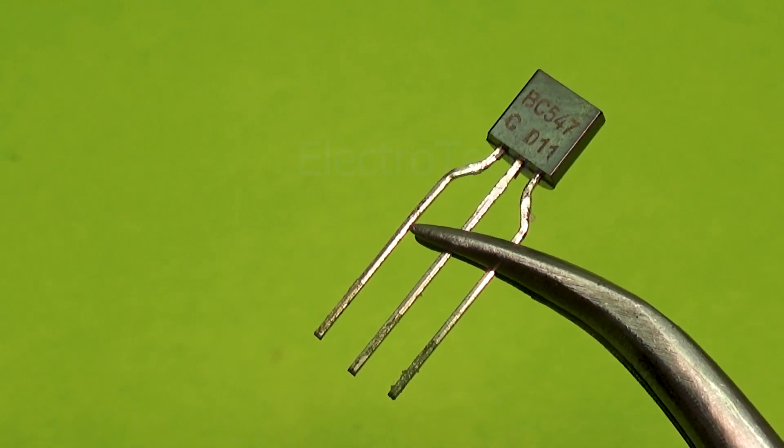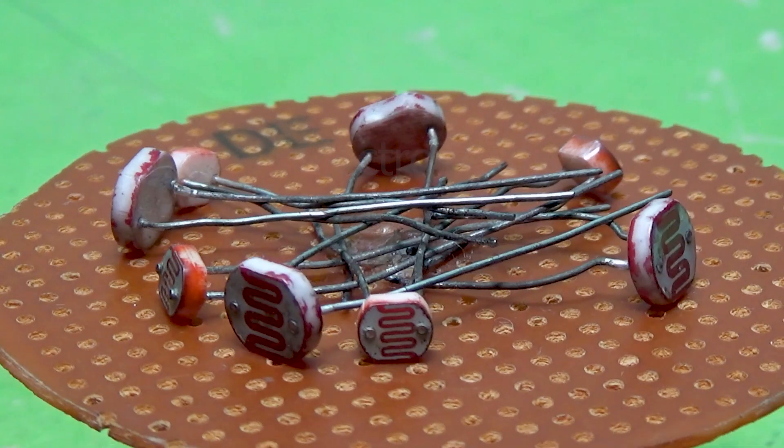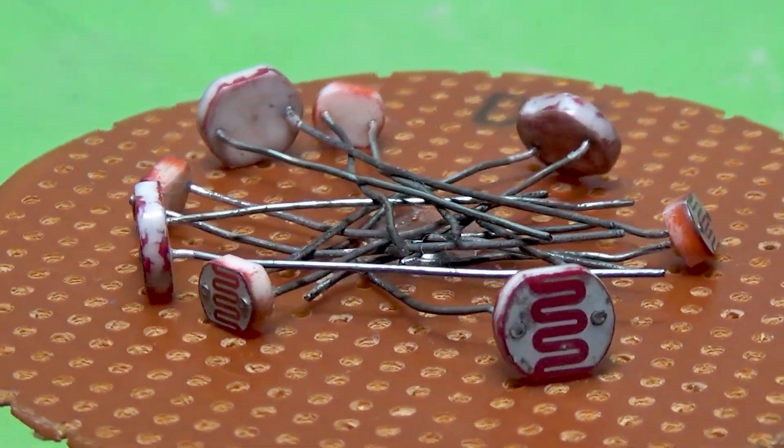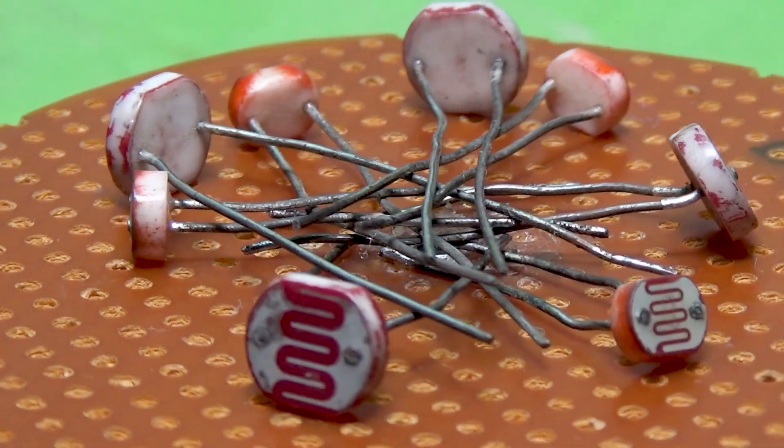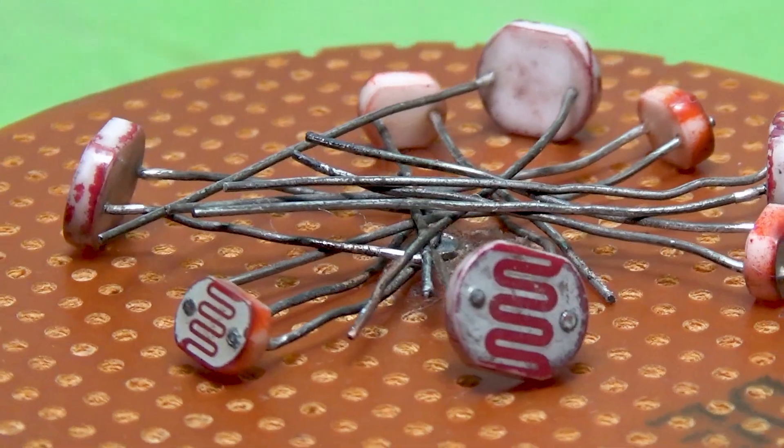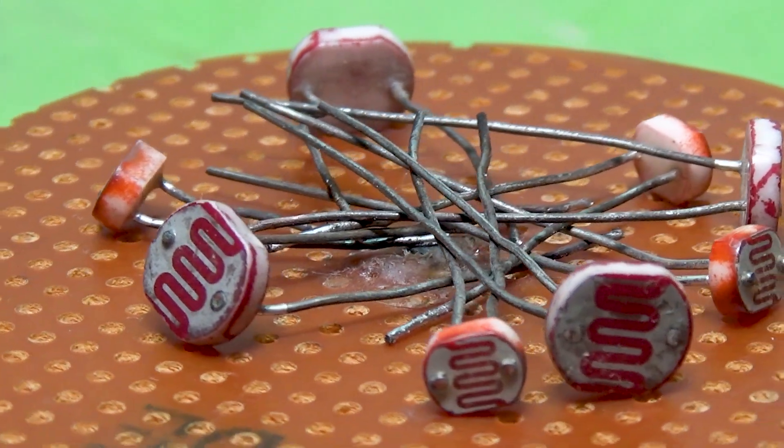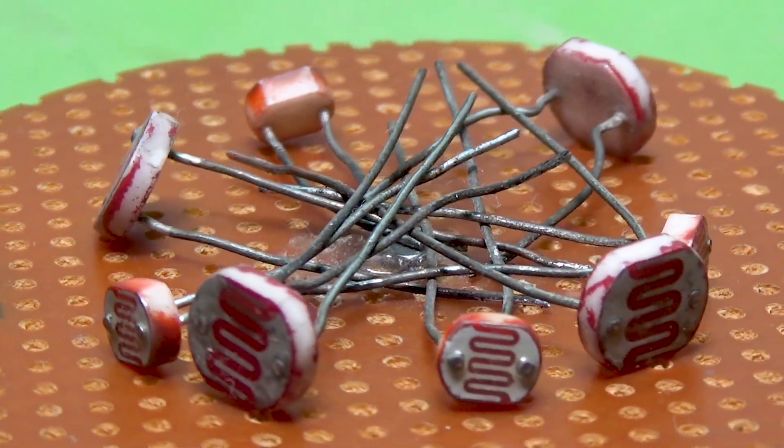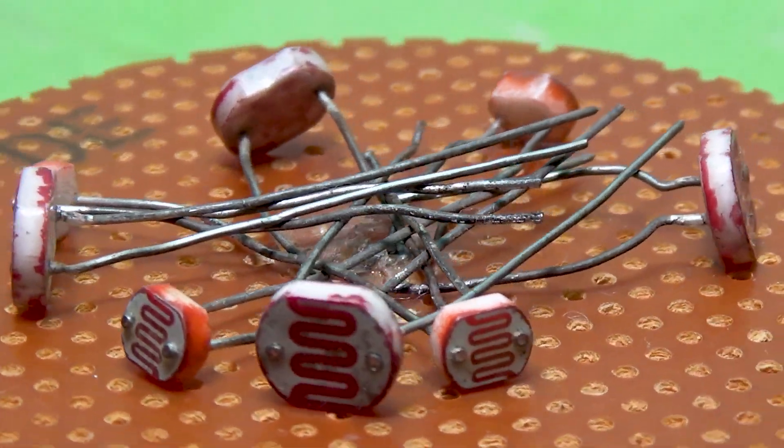Let's take a closer look at the components you'll need for this circuit. LDR, light-dependent resistor. The LDR changes its resistance depending on the amount of light falling on it. When light increases, its resistance decreases. When light decreases, its resistance increases. This simple property helps us detect darkness.